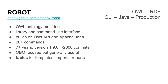Robot is the tool that is kind of the flagship of the OntoDev suite. It's been around for more than seven years, with more than 2,000 commits from a thriving open source community. Robot is focused on ontology development and automation, especially for the Open Bio-Ontologies community, but it's generally useful for any OWL project. Robot also uses tables for different things such as term templates, imports, and reports.